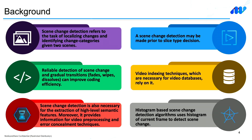Scene change detection is important in a number of scenarios. Overall, it improves compression efficiency, but other than that, in video databases where indexing is important, it plays a vital role. It also helps to extract high-level semantics that are useful in error concealment techniques. Many algorithms have been devised to detect scene changes, and some of them use the histogram of the current frame.